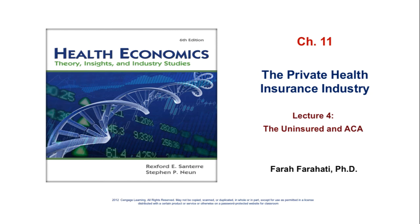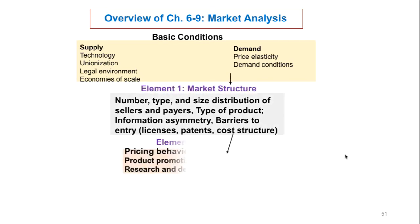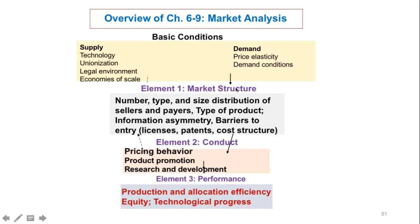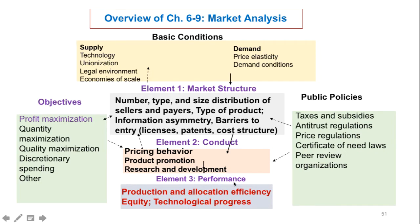Chapter 11, Lecture 4: The Uninsured and the Affordable Care Act. In the previous lecture, you learned about the market structure of the insurance industry, its conduct through pricing behavior, and its performance based on the allocation of efficiency and equity.